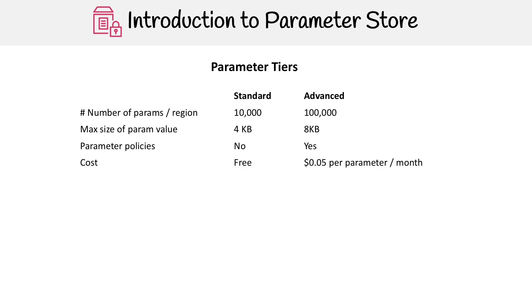Talking about those tiers, there are two tiers: standard and advanced. Generally you're using the standard one, and this is scoped based on region. If you never exceed 10,000 parameters, Parameter Store is going to be free. But once you go over 10,000, you're using advanced parameters. Similarly, if you need a parameter value higher than four kilobytes, or if you want to apply parameter policies, you'll have to use an advanced parameter.